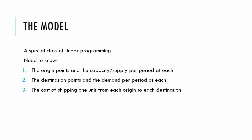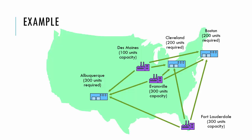Let's look at an example to help us understand how we can model this type of problem. In this example, we are producing our product at three different locations in the U.S.: Des Moines, Evansville, and Fort Lauderdale. After the products are produced, they need to be shipped to three different warehouses, which are located in Albuquerque, Boston, and Cleveland.